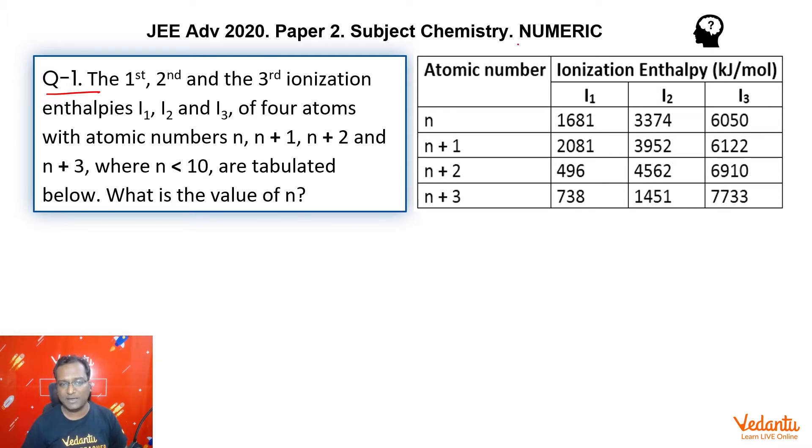Now this question is a numeric type question guys. So in a numeric type question, we have to be very sure of our answer. Generally in organic questions, numeric type questions, there is a double check available like we will be seeing in this question. So the question says 1st, 2nd and 3rd ionization enthalpies of 4 atoms are given to us, whose atomic numbers are related like this. It clearly says that n is less than 10. He is asking which is the atom, what is the atomic number of n?